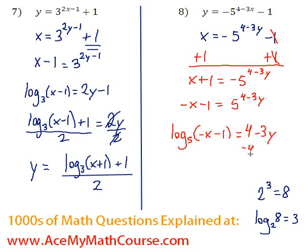Great, now let's subtract 4 from both sides of the equation. So we get just log base 5 negative x minus 1 minus 4 equals negative 3y.